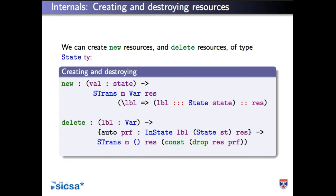The 'new' operation, given some initial value, adds a thing to the list of resources in that state. To 'delete' a thing, given some label and a proof that that label exists in the current list of resources, it drops it from the list. 'In-state' is a predicate saying a label exists in the current environment — we saw this auto-proof yesterday. The crucial thing is: you can 'new' always create something with a state type, and 'delete' can only ever delete something with a state type, so you have to know the concrete representation to delete something. This is important because it means you can never delete something you're not entitled to delete.